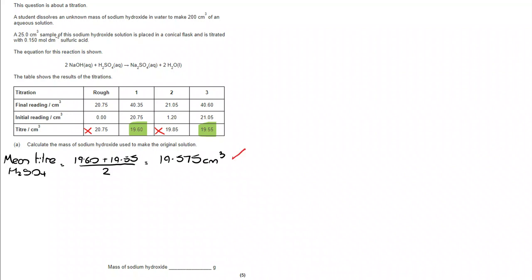So I put all of that in place. I find the average of the two I'm using and I get to 19.575 cm³.